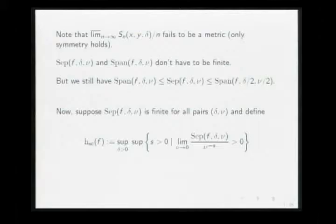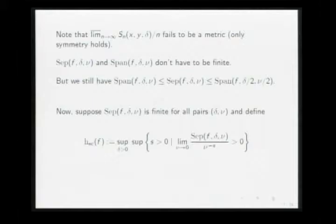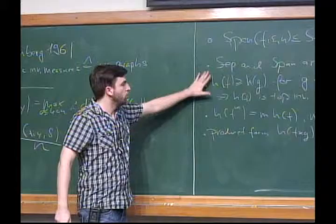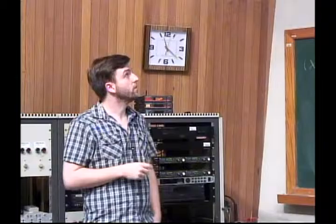Assuming these sets are finite for any pair delta, nu, we can look at the growth behavior. We take our separating points compared to a certain growth rate, look for the biggest exponent such that we still get a positive quantity, and then take the supremum with respect to delta. This limit doesn't have to exist in general — one has to consider lim sup and lim inf — but just for the talk I use the limit. If the set is not finite, then we set this quantity to infinity. This is our definition. I should also say that instead of polynomial growth behavior, you could also look for other growth behaviors, and at least some of the general properties I present don't depend specifically on polynomial growth.